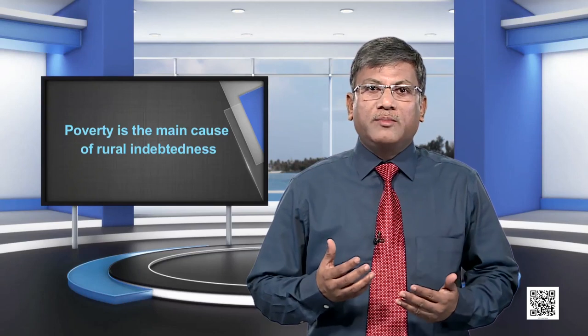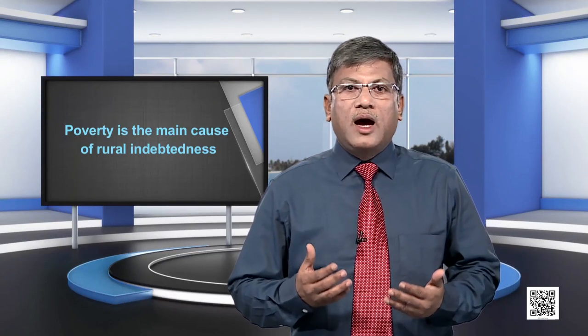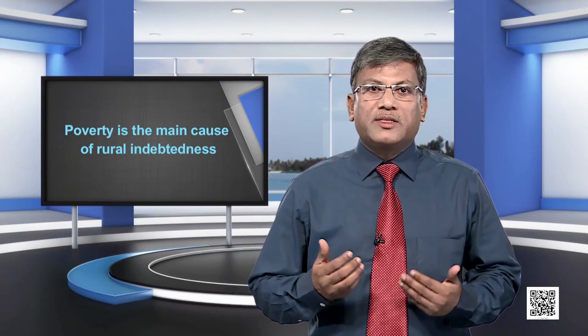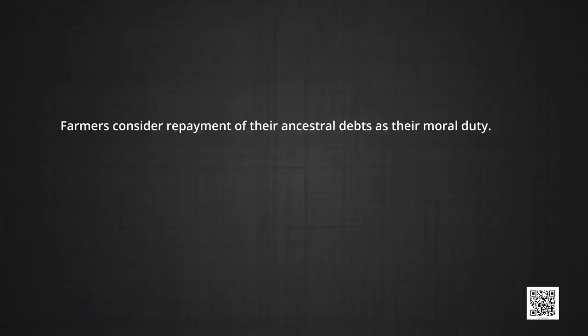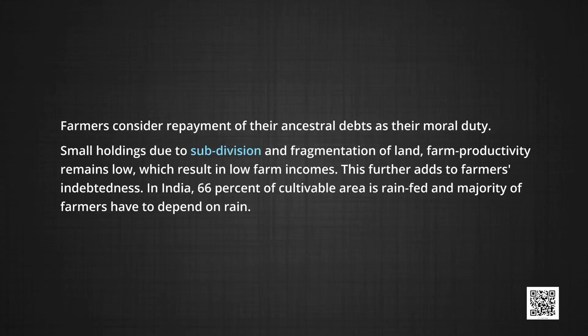Because of heavy pressure on land, income of the average Indian farmer is very low. A marginal farmer has to borrow funds to meet his living expenses. Ancestral debt is another important cause of rural indebtedness in India; farmers consider repayment of their ancestral debts as their moral duty. Small holdings due to subdivision and fragmentation of land means farm productivity remains low, which results in low farm incomes. This further adds to farmer's indebtedness. In India, 66 percent of cultivable area is rain-fed and the majority of farmers have to depend on rain.